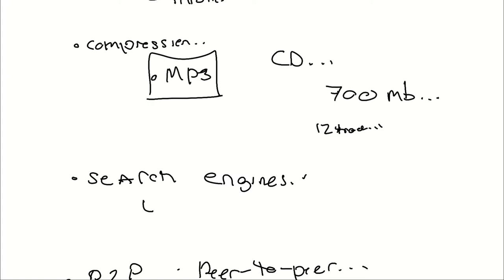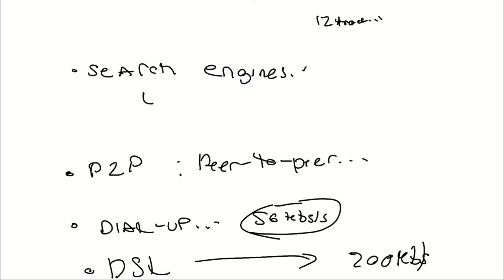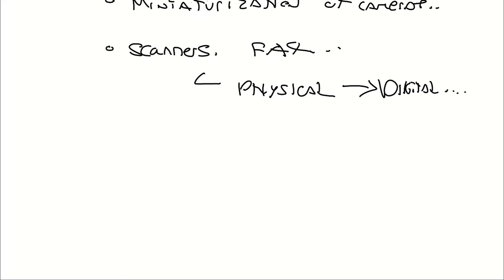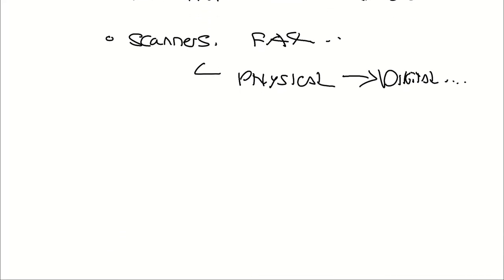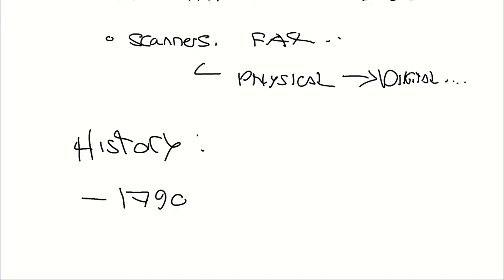Next, before we jump into the court cases, let's talk about a timeline of copyright — history lesson time. This goes all the way back to the 1790s, which was when the first copyright law was passed. The first Copyright Act per se came actually in 1909, and it defined an unauthorized copy as a form that could be seen and read visually.